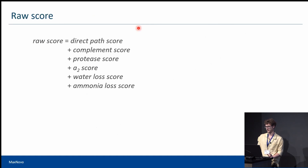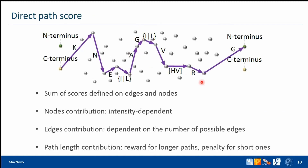The direct path score is defined as a sum of scores on edges and nodes. Each node contribution is intensity-dependent, meaning that if a peak corresponding to a node is prominent and higher than neighboring peaks, the node gets a reward. If a node corresponds to a noisy peak with lesser intensity than surrounding peaks, then this node gets a penalty.